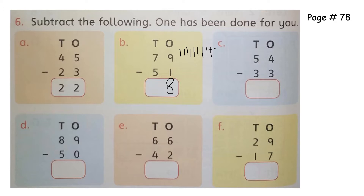In the ones column we write eight. Now we will subtract tens — we have to subtract five tens from seven tens: one, two, three, four, five, six, seven. We have to cut five: one, two, three, four, five. How many are left? Two tens.